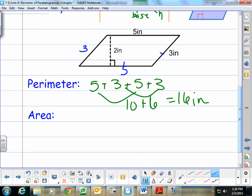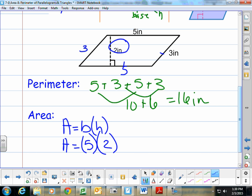Our area is base times height. I write my formula first. Area equals my base, which is 5 inches, times my height, which is 2 inches. The 3 is not the height—the 3 is the side part. The height is from top to bottom. So 2 times 5 is 10. But this was inches times inches, which makes our answer 10 square inches.